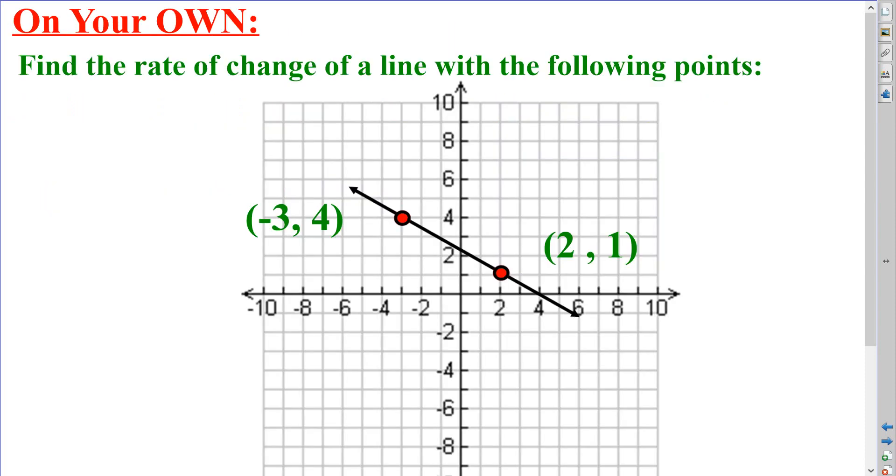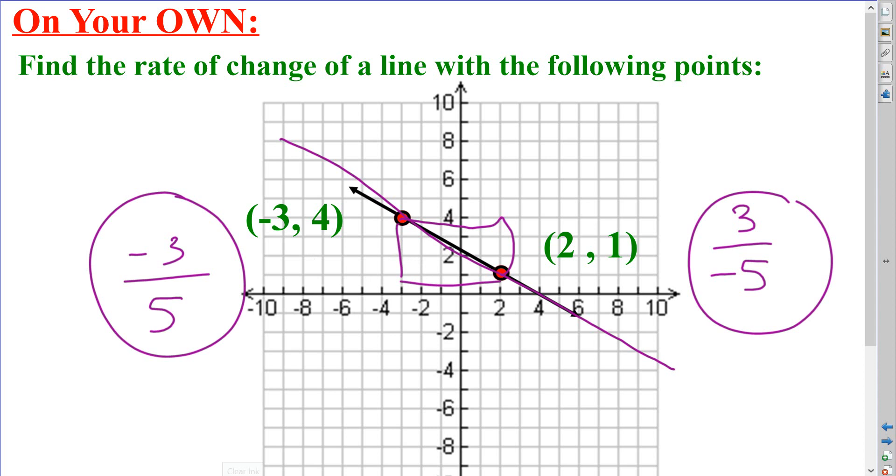Why don't you try this one on your own? Pause the movie, and then turn it back on when you're finished. So we have a rise of 3, and a run of 1, 2, 3, 4, 5. A rise of 3 and a run of negative 5. Or, down 3, right 5. These are the same answers. This line is going downhill, right? So it makes sense that we would have a negative rate of change.